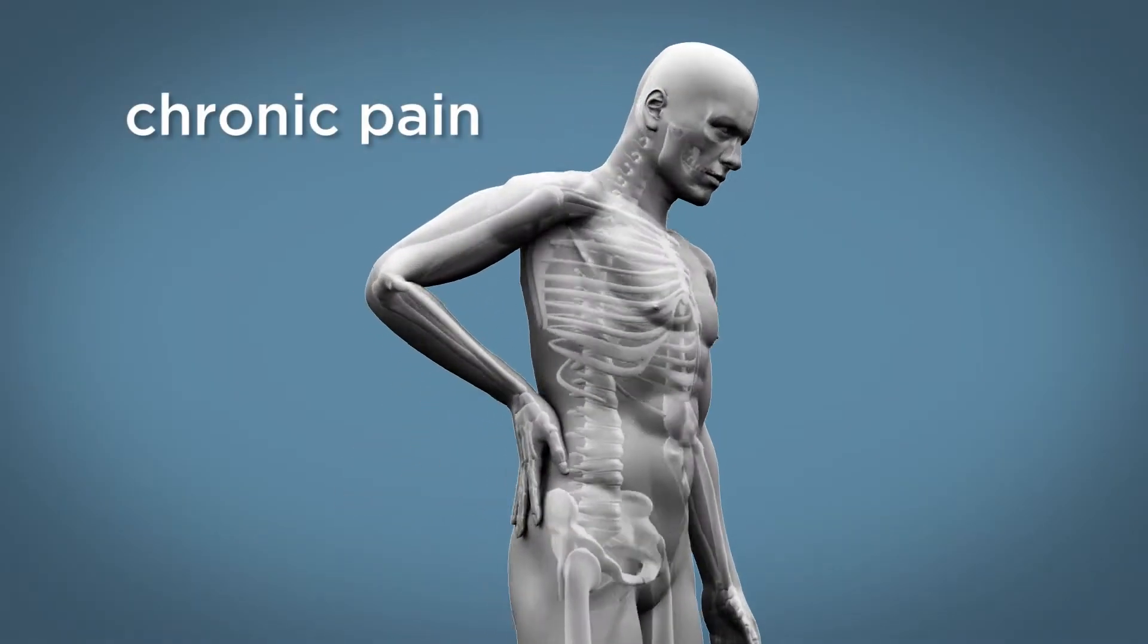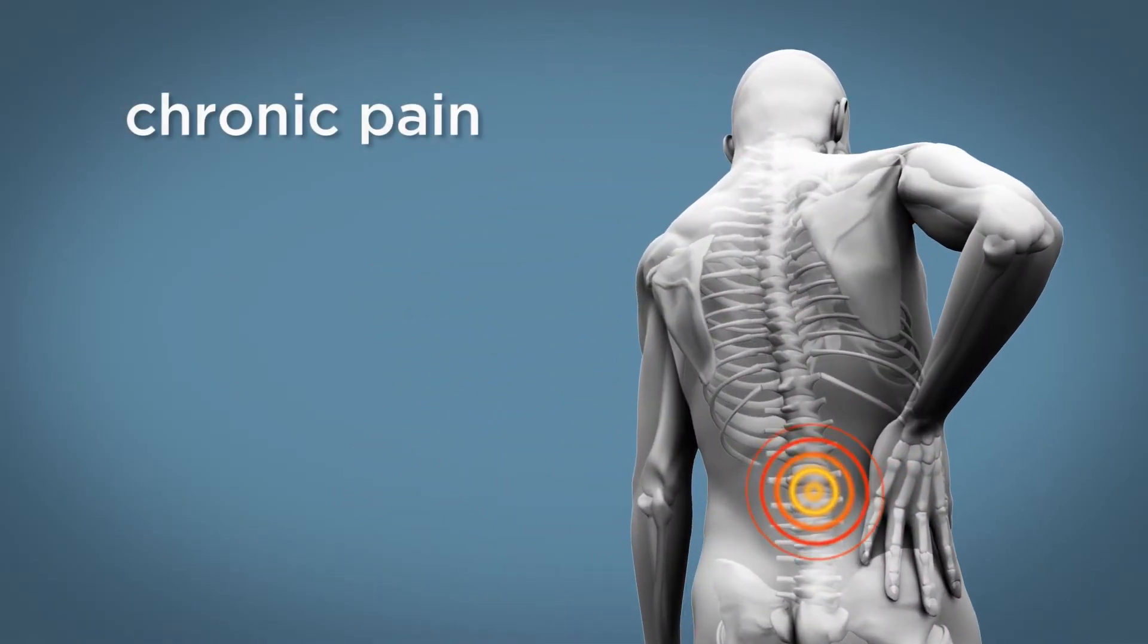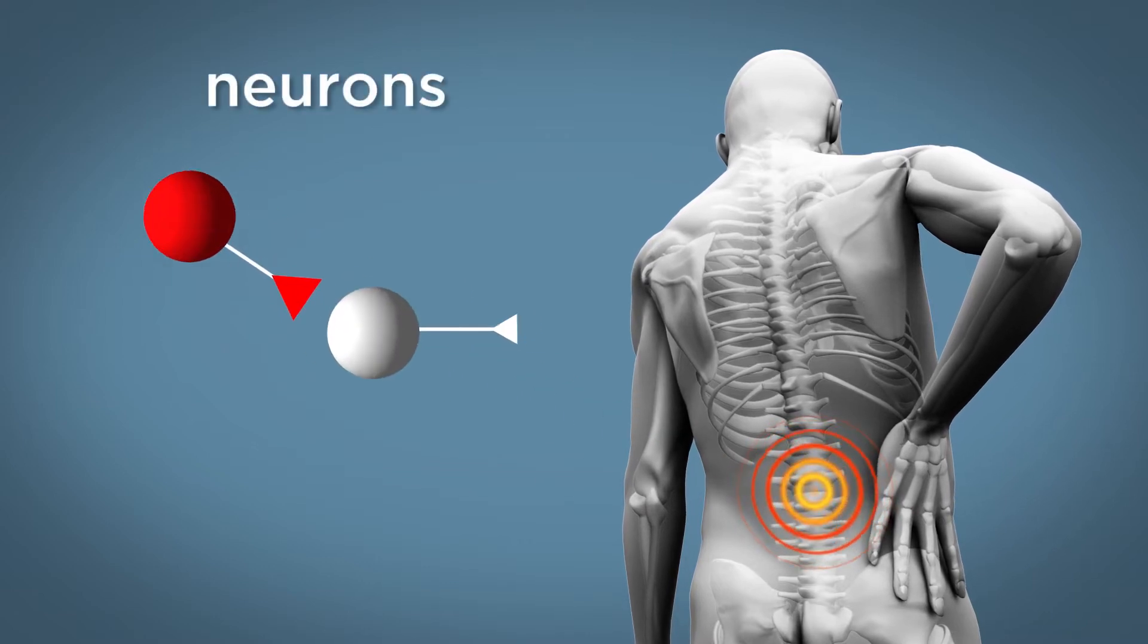Chronic pain is a disease that changes how your nerves and brain respond to pain. Pain cells, called neurons, turn on pain.